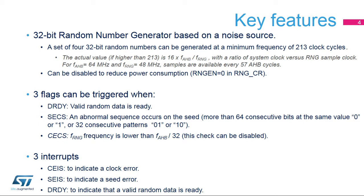The RNG performs a basic verification of randomness on the provided data. For example, if more than 64 consecutive bits have the same value, 0 or 1, or there are more than 32 consecutive alternating 0s and 1s, a seed error current status flag is set. A clock error current status flag is set if the RNG clock is less than HCLK divided by 32. This check can be disabled, especially when the RNG clock is initialized low for maximum entropy.